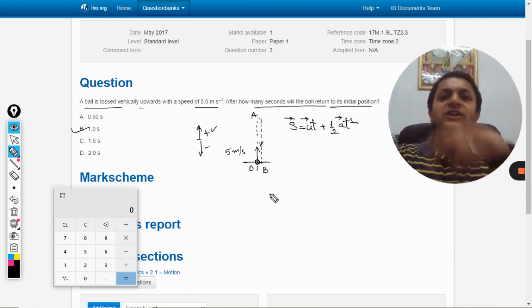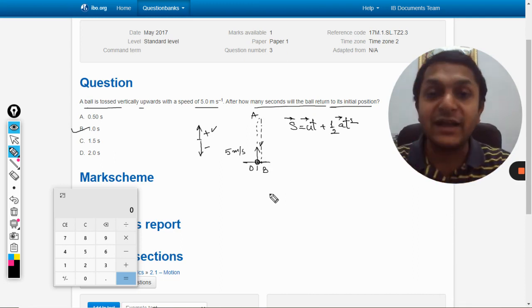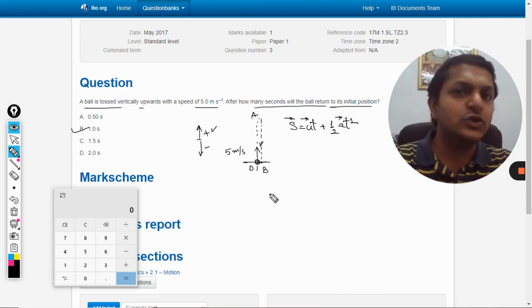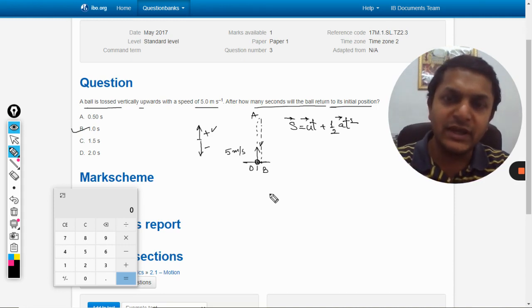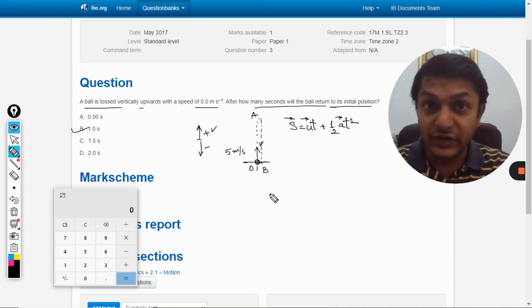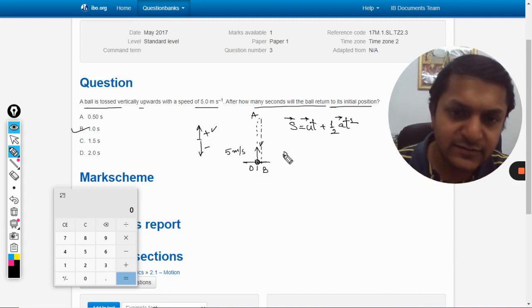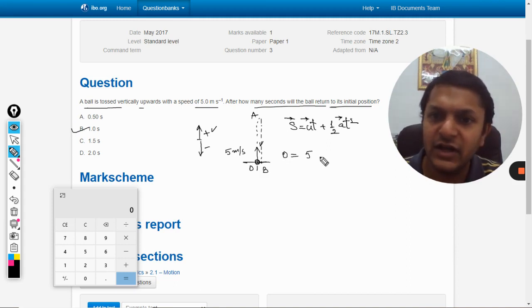In the total journey, the ball is coming back to the same location. What is the total displacement of the body in time t? Zero, because it has reached the same point. Velocity in the upward direction is 5 and we need to find t. Plus half, and the acceleration is g which is 10, but downwards, so it will be minus 10 into t square.